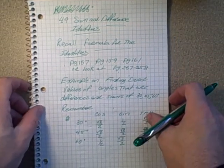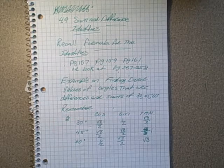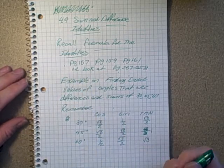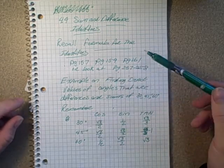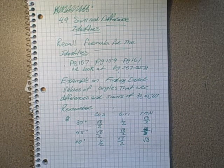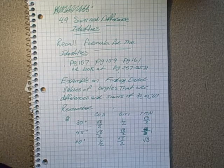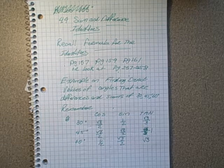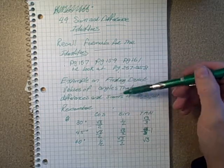Okay, this video is the tutorial for 4.4, which deals with sums and differences of identities. If you look in the book, they have formulas for the sum and difference identities. Pages 157, 159, and 161 have the cosine, sine, and tangent sum and difference identities. You can also see the same identities on page 258 in the back of your book. We're going to be using those to solve some problems.